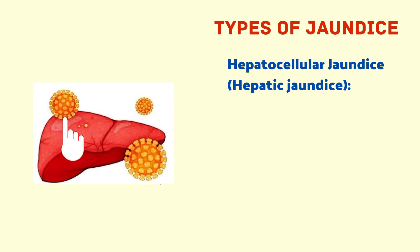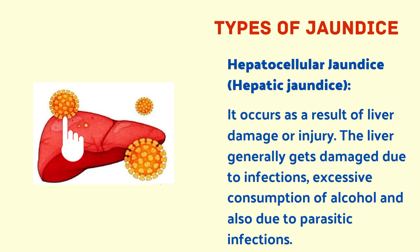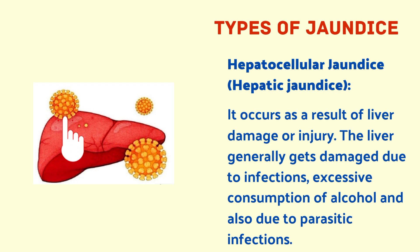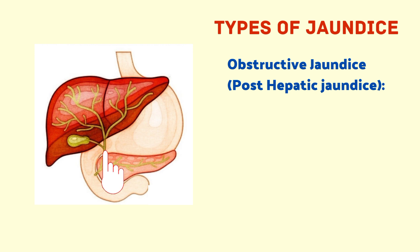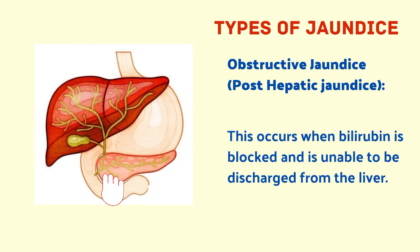Hepatocellular jaundice, also known as hepatic jaundice, occurs as a result of liver damage or injury. The liver generally gets damaged due to infections, excessive consumption of alcohol, and parasitic infections. The third type is obstructive jaundice, also known as post-hepatic jaundice, which occurs when bilirubin is blocked and is unable to be discharged from the liver.